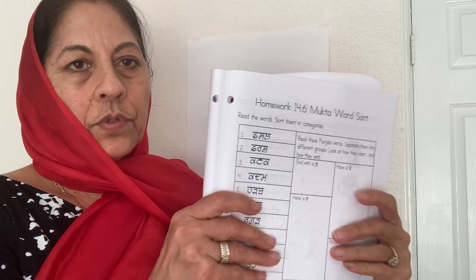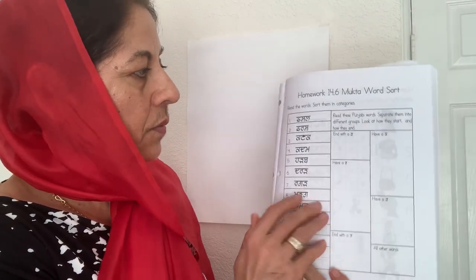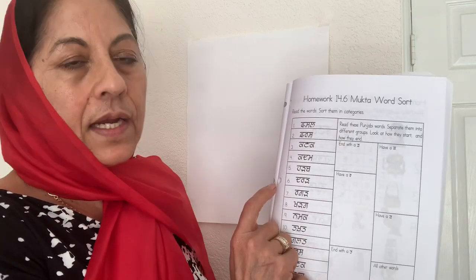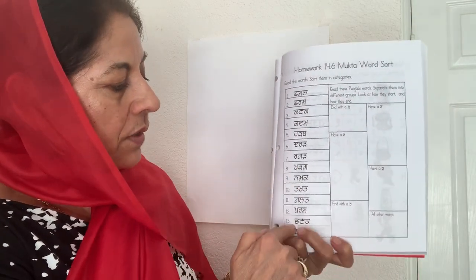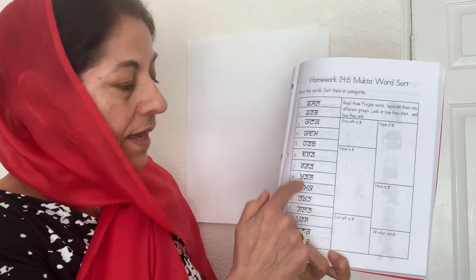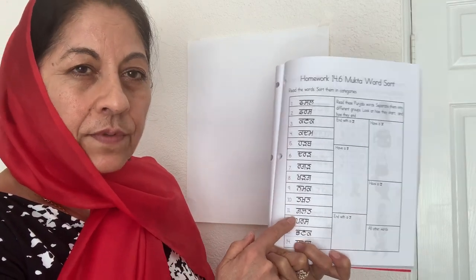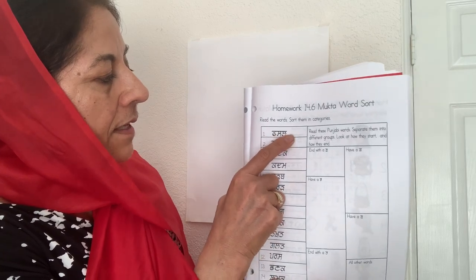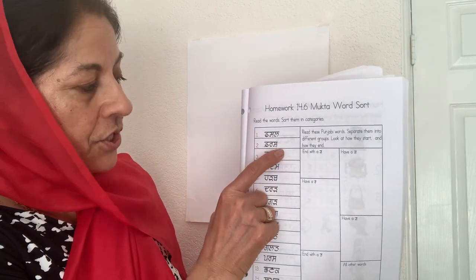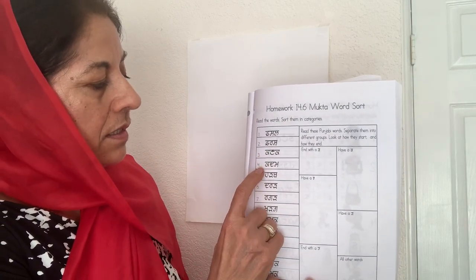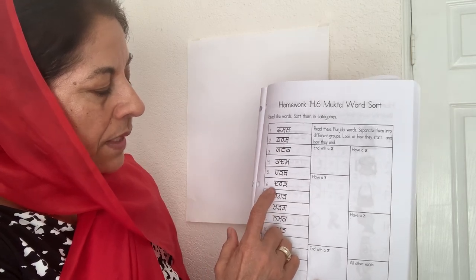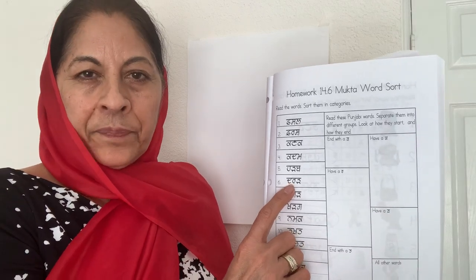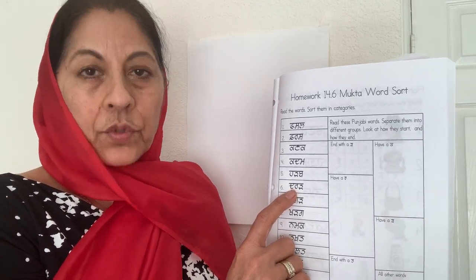The next page is your homework. Read the directions: read the words and sort them into categories. These are the same words, but there are some extra words included — some rhyming words. Let's read them: fasal, farsh, kanak, kardam. Kardam means to crush or grind something coarsely.